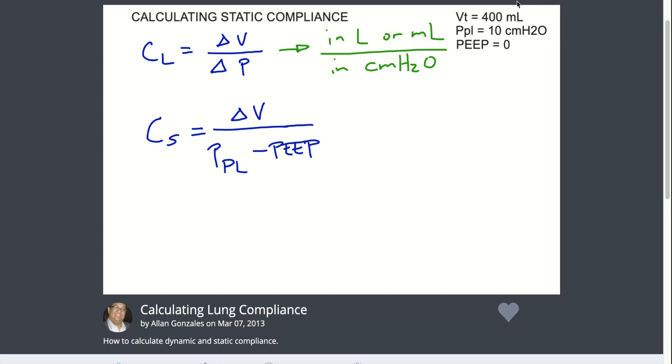To calculate static compliance, the change in pressure instead of the PIP or the peak inspiratory pressure is now the plateau pressure. Basically, the plateau pressure is the pressure needed to open up the lungs without any air movement, thereby creating a plateau.